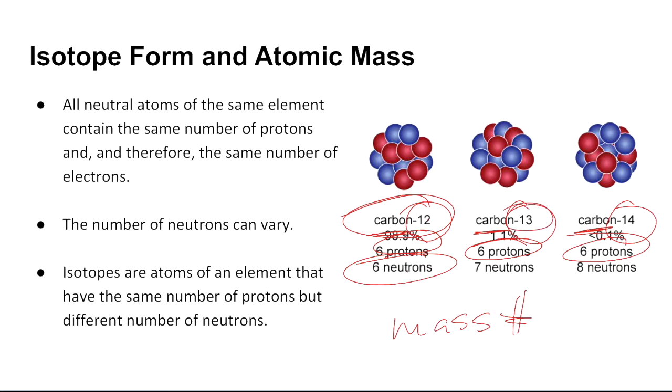13, the mass, subtracted by six, seven neutrons. 14, the mass, subtracted by six protons, gives me eight neutrons. So isotopes are atoms of an element that have the same number of protons, but a different number of neutrons, thus giving it a different mass.